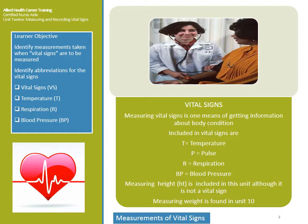Measuring height is included in this unit, although it is not a vital sign, and measuring weight was covered in unit 10. Another vital sign is how to measure an oxygen level — checking the amount of oxygen in your blood, sometimes called pulse ox. The sixth vital sign is pain, and we will teach you about that as well.